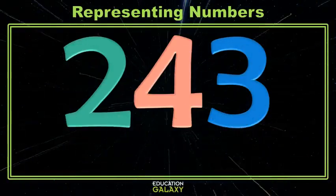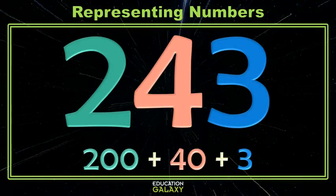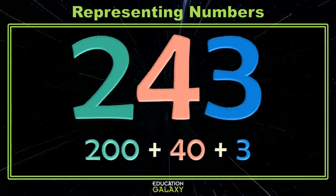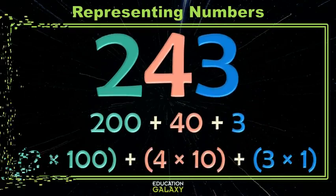We know how to take a number like 243 and break it into a sum of its place values. And we know how to take those place values and break them into products based on their place values.